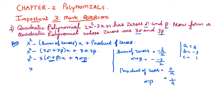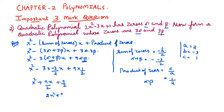Substituting into the formula: x² minus 3 times (3 by 2)x plus 9 times (1 by 2), which gives x² minus (9x by 2) plus 9 by 2. Taking the LCM of 2: this becomes (1 by 2)(2x² plus 9x plus 9), so the required polynomial is one-half times (2x² plus 9x plus 9).